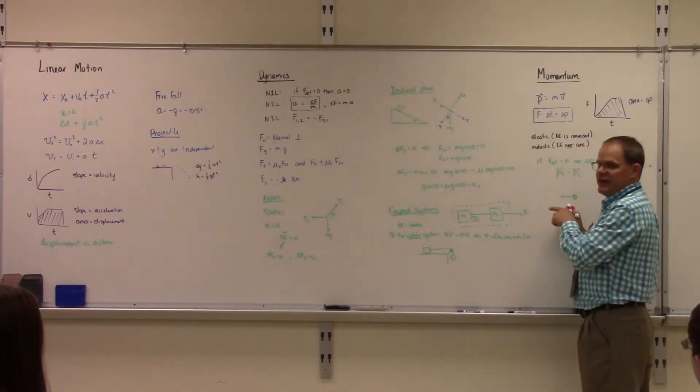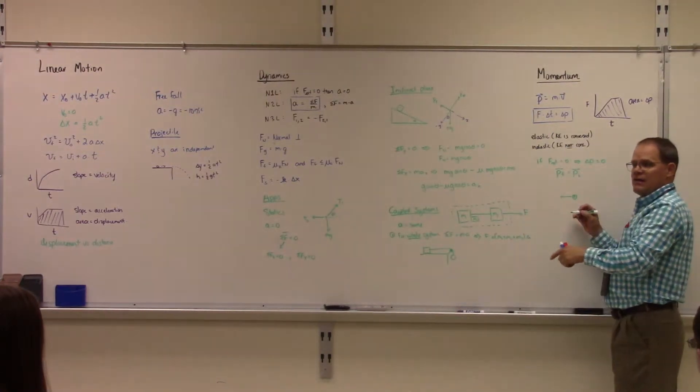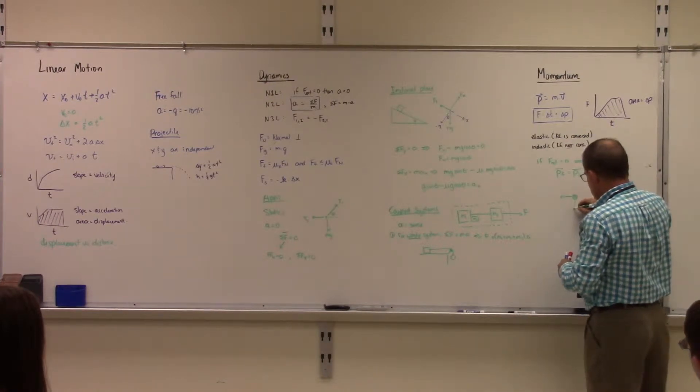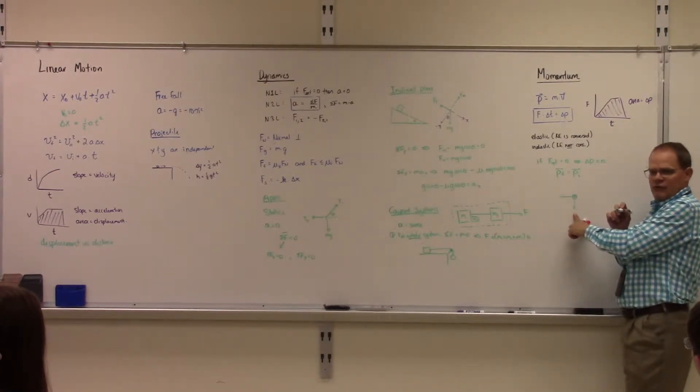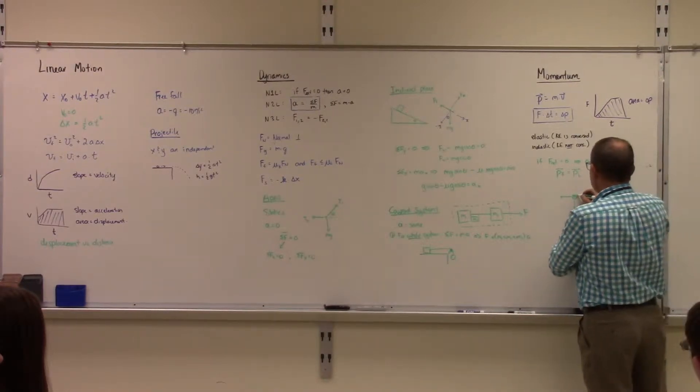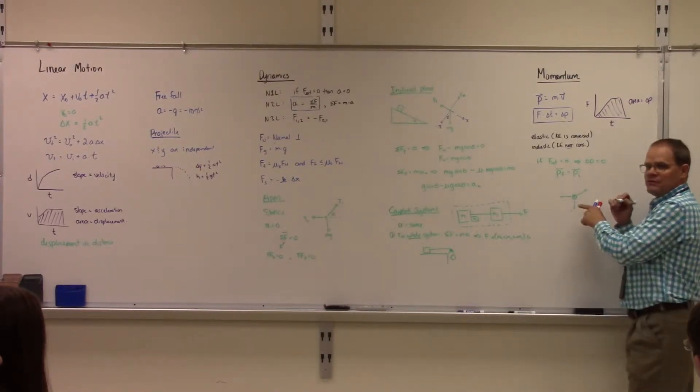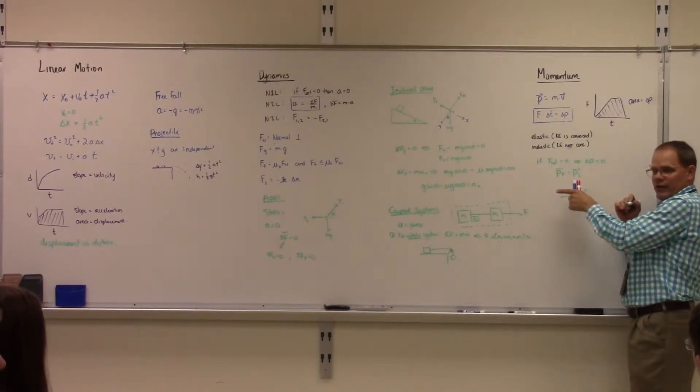So if one fragment is carrying negative momentum and this one goes this way, it doesn't carry any momentum in the x direction, right? It's all vertical. There has to be some fragment carrying the same amount of momentum this way as that one had that way.